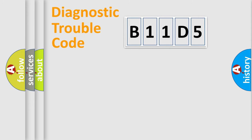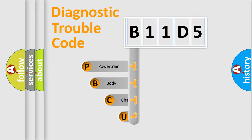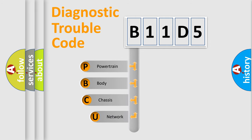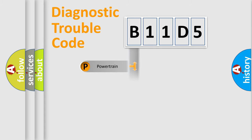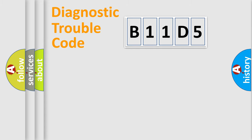Let's do this. First, let's look at the history of diagnostic fault code composition according to the OBD2 protocol, which is unified for all automakers since 2000. We divide the electric system of the automobile into four basic units: Powertrain, Body, Chassis, and Network.